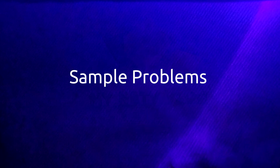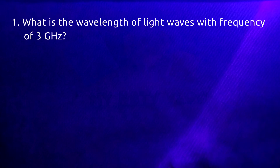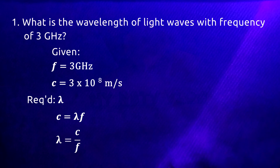Let's try solving some problems involving the wave equation. What is the wavelength of light waves with a frequency of 3 gigahertz? The given quantity is frequency, which is equal to 3 gigahertz. If the speed is not specified in the problem, we assume the speed is the speed of light in a vacuum, so we use the value 3 times 10 to the 8 meters per second. To solve for the wavelength, we derive its equation from C equals lambda f, giving us lambda equals C over f.